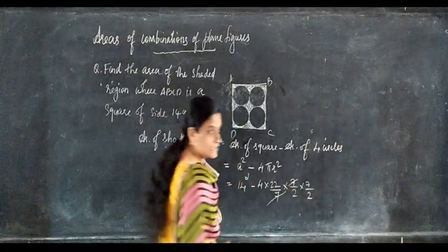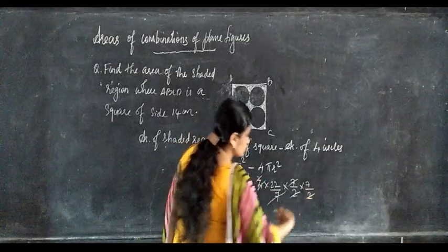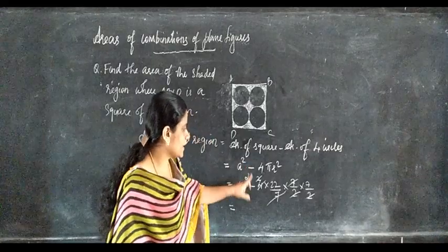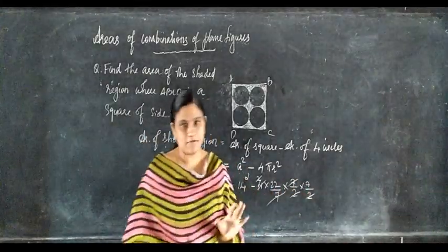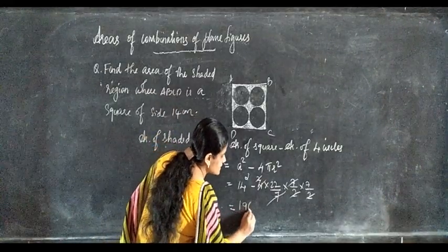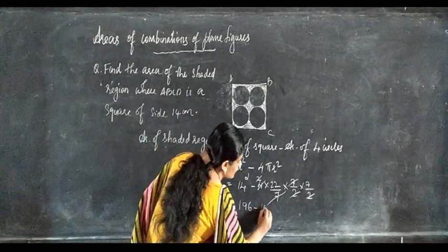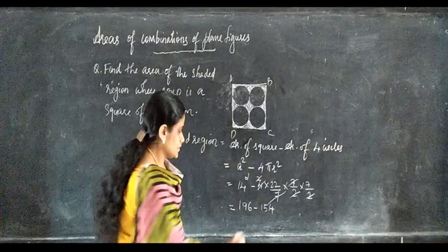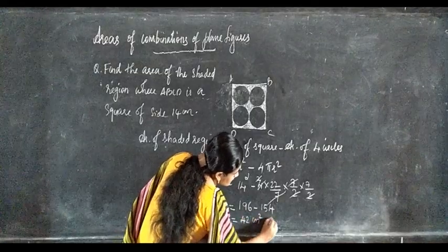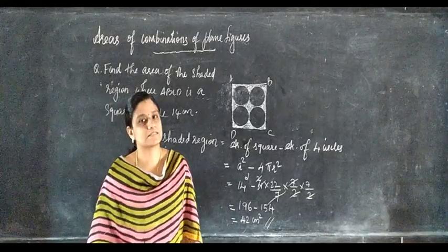Cancel 7 with 7, and 2 with 4 — leaving 14 squared minus 22 into 7. So: 196 minus 154 equals 42 centimeters square. Therefore, the area of the shaded region is equal to 42 centimeters square.